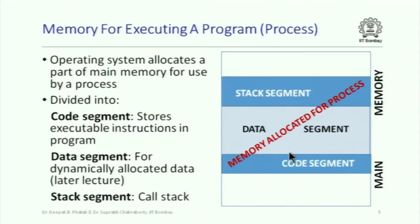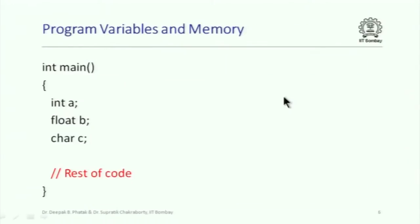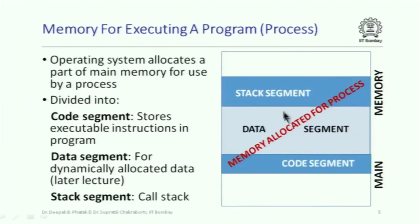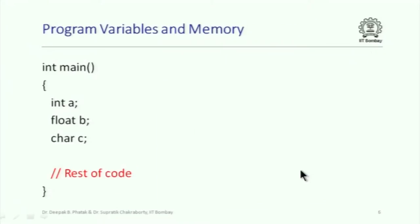We have already seen the stack segment — this is where the call stack is, where activation records get pushed when a function is called. The data segment we have not seen so far; we'll get to see its use in a couple more lectures. The code segment is where the executable instructions are stored. So this is the memory allocated for a process.